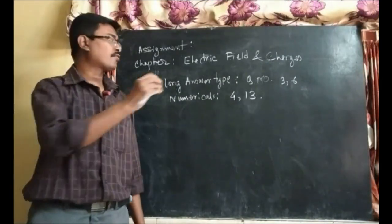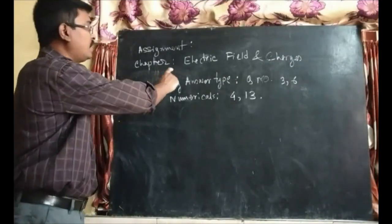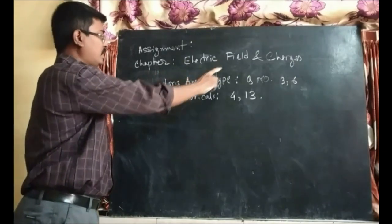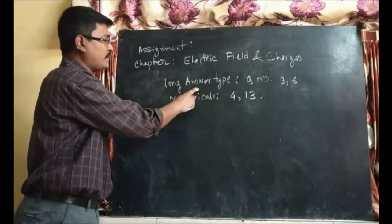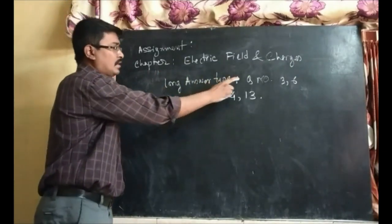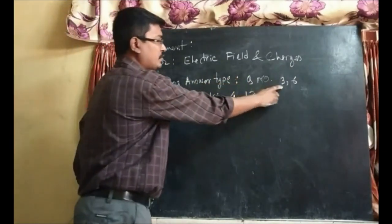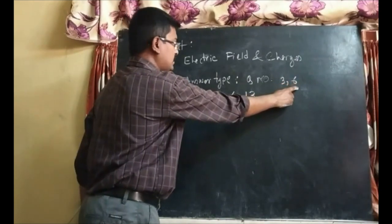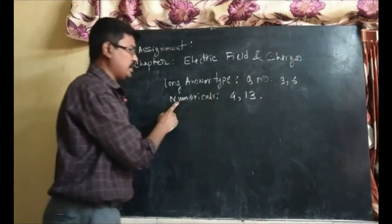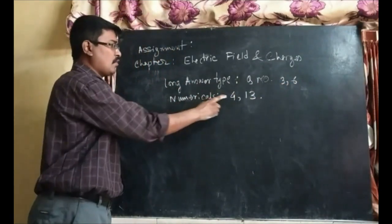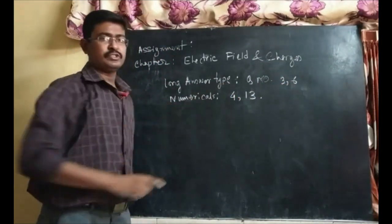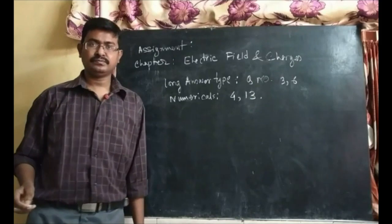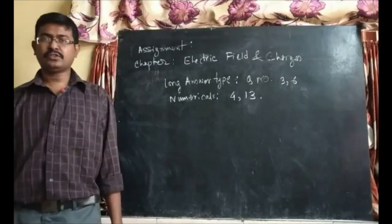Now for assignment from electric dipole and charges — long answer type: question numbers 3 and 6. Also memory questions 4 and 13 of the unit. Thank you.